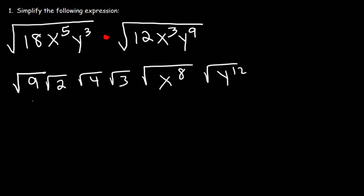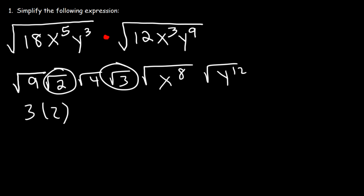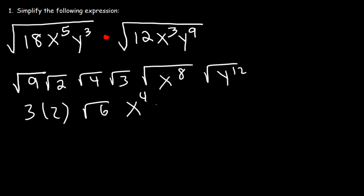The square root of 9 is 3. The square root of 4 is 2. We can't simplify root 2 and root 3, but we can multiply them — that's going to be the square root of 6. The square root of x to the 8th is x to the 4th. And the square root of y to the 12th is y to the 6th.